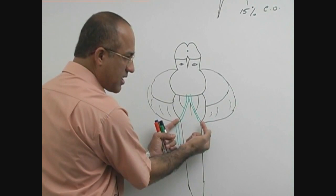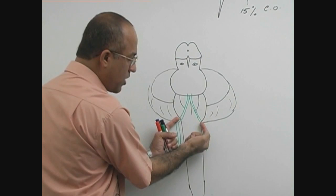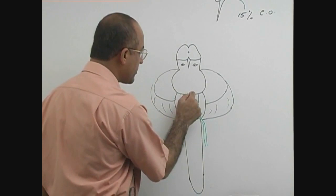They pass through foramen magnum, pierce the dura mater and arachnoid mater, appear into subarachnoid space. Then they move forward, upward and medially over medulla. And both vertebral arteries meet each other at what point? Pontomedullary junction.